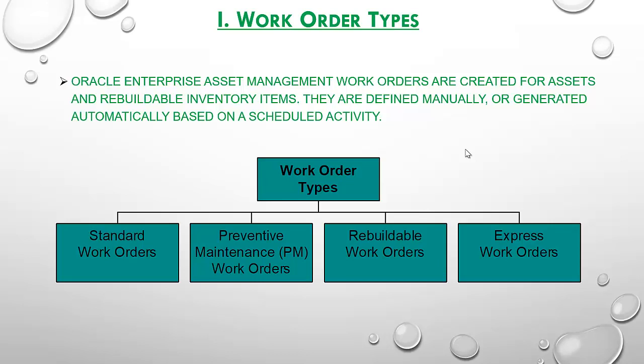Rebuildable work orders are created as child work orders. For example, a work order was issued for the inspection of a pump. During the pump inspection, you found that the motor — one of the components of the pump — is problematic. You have two options: you can repair and reinstall the motor, which is a rebuildable item, or you can replace it by issuing a new motor rebuildable item from inventory. If you choose to perform a material issue from inventory, the old motor rebuildable item attaches to the work order automatically, creating the child rebuildable work order number associated to the parent work order.